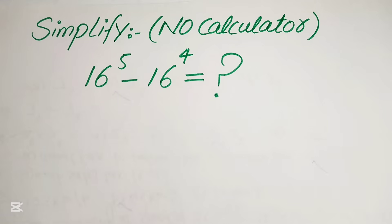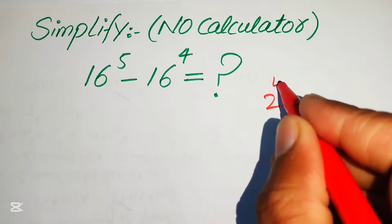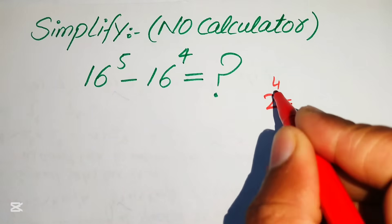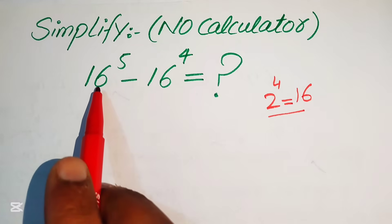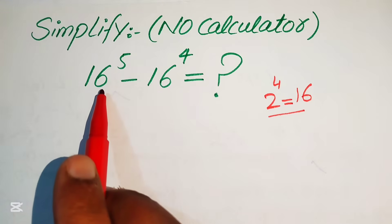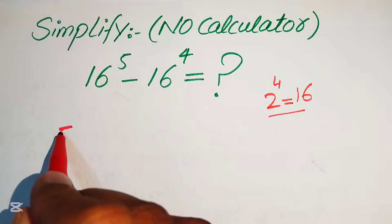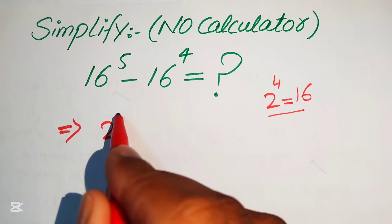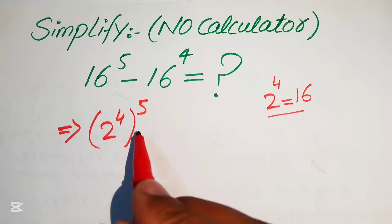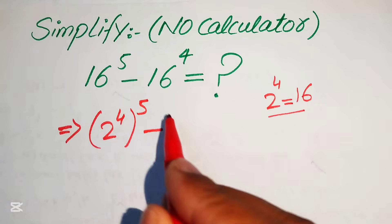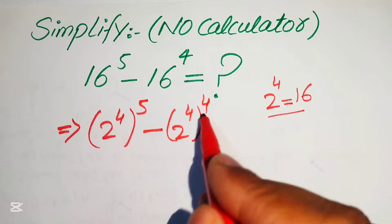The very first step: we know that 2 to the power of 4 equals 16. So we focus on the bases and write our bases as 2 to the power of 4. We replace 16 with 2 to the power of 4, writing it as (2^4)^5 minus (2^4)^4.